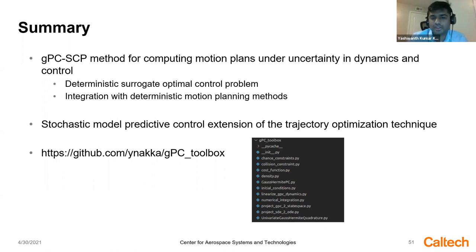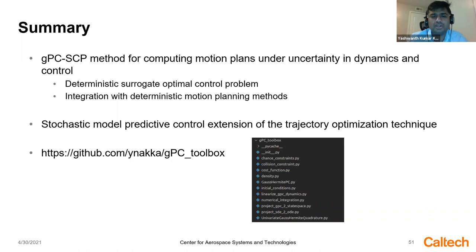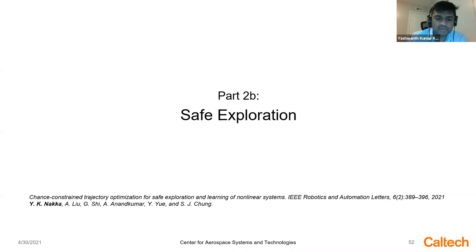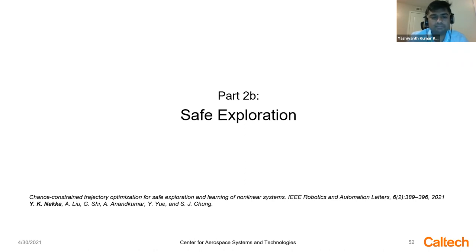We propose a convex subset for collision and terminal state constraints, and a stochastic MPC extension. We have implemented a toolbox that takes in a stochastic optimal control problem and outputs a deterministic surrogate: you specify the cost function, dynamics, and chance constraints, and get a surrogate problem for control and motion planning. In the safe exploration work — an extension of the above — I do not know the interaction with the environment but want to collect data to learn the uncertainty model. This was recently published in the IEEE RL journal.